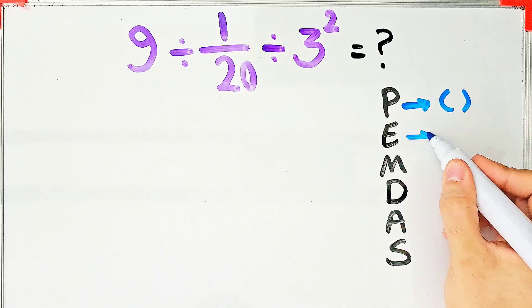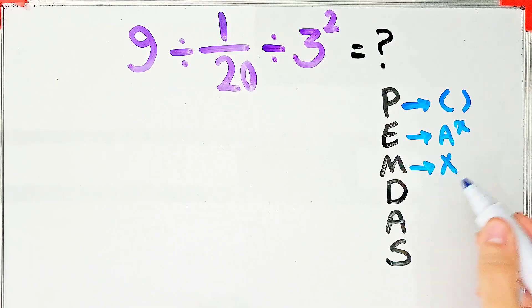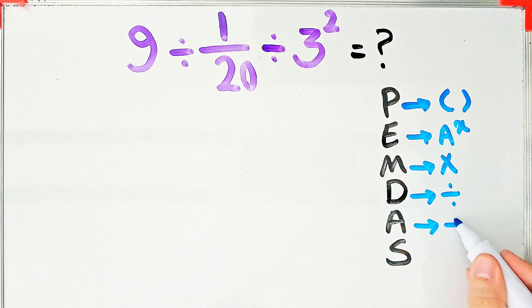In this rule, P stands for parentheses, E stands for exponent, M stands for multiplication, D stands for division, A stands for addition, and S stands for subtraction.